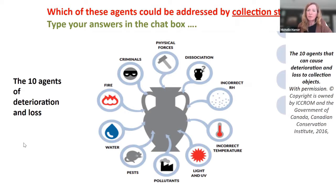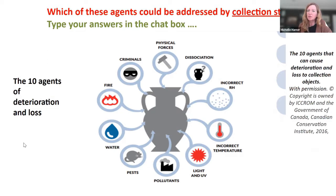If you think about the way we store collections — the room, the cabinets, the shelving, the bottles, the boxes — which of these agents of deterioration can we address through storage? Physical forces, disassociation, incorrect humidity, incorrect temperature, light and UV, pollutants, pests, water, fire, and criminals — which of those can be addressed and prevented or mitigated by the way we store? All of them. That just shows how critically important storage is. Today's topic is a really, really important one for protecting our collections.